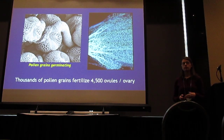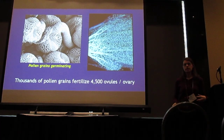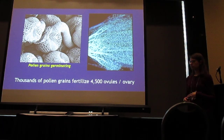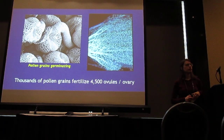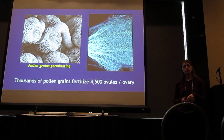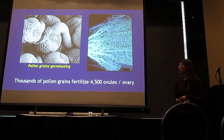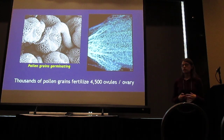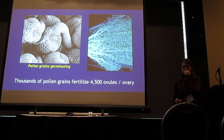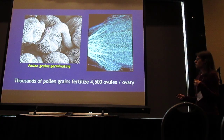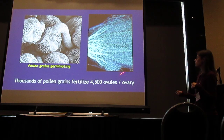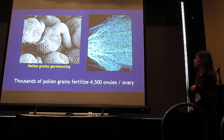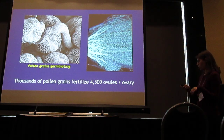Mimulus flowers open and the anthers dehisce or release pollen around 5 a.m., and the bi-lobed stigma is sexually receptive upon flower opening. During pollination, thousands of pollen grains can be deposited, and these germinate and develop pollen tubes which grow down the style to fertilize up to 4,500 ovules per ovary.